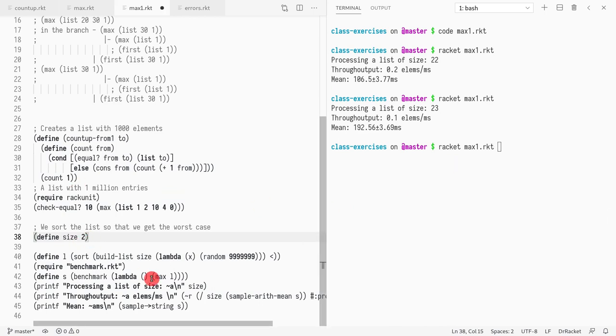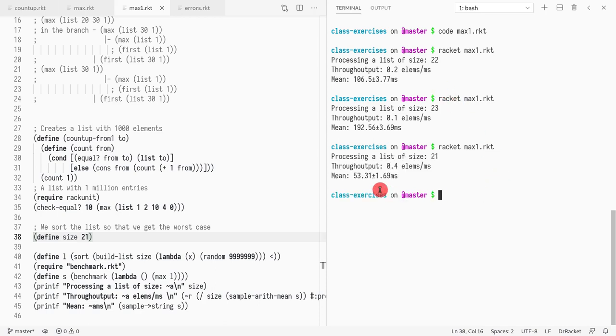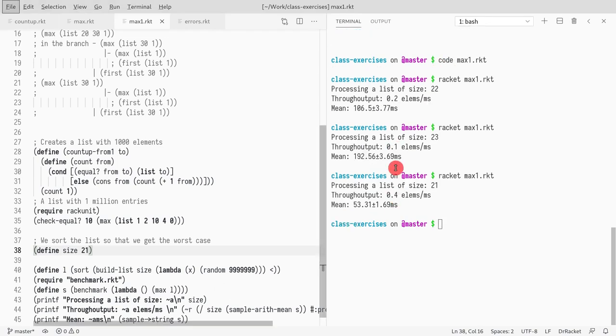So this time we're going to make it even shorter. So we'll try with 21 elements. Let's see if it's a quarter of this time. So I run it. And notice it is a quarter of the time. So every element that we take, it doubles the time to compute the max.